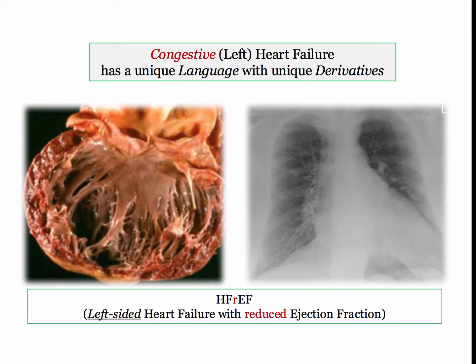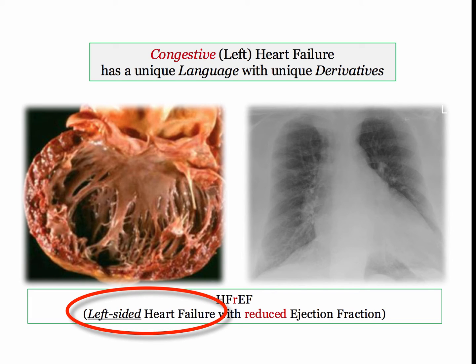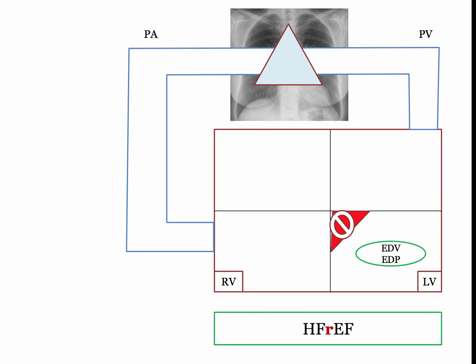Now that we've defined the problem with a failing heart, let's sort out the congestive component of congestive heart failure. This discussion works best if we consider it from the perspective of reduced ejection fraction, avoiding the nuances of diastolic dysfunction and high output failure for the time being. Our discussion begins with left-sided heart failure. Here is my cardiac circuit, noting the failure of perfusion.